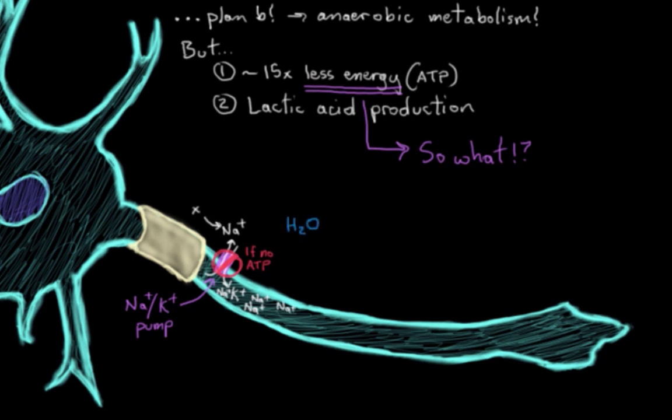And when water in this extracellular fluid, this ECF here, notices this high concentration of sodium in the intracellular fluid, in the ICF, the water rushes inside the neuron to try to dilute out that high concentration of sodium in the neuron.